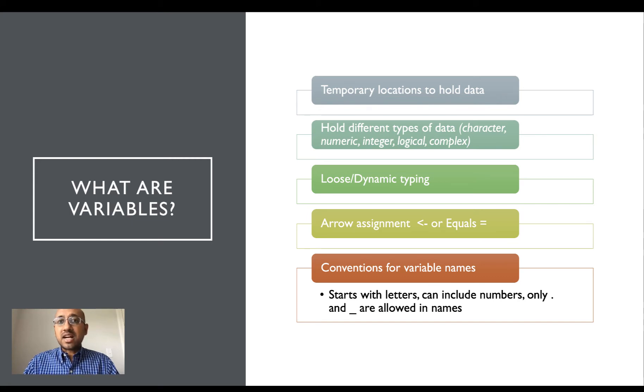A variable can start holding integer data and change to holding text or character data. This is known as loose or dynamic typing when talking about programming.